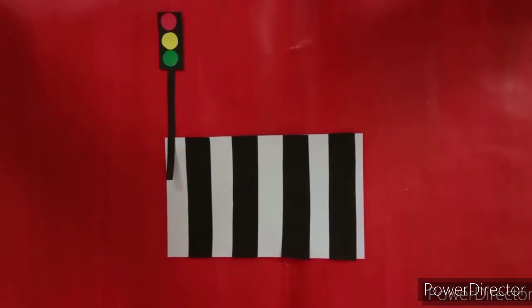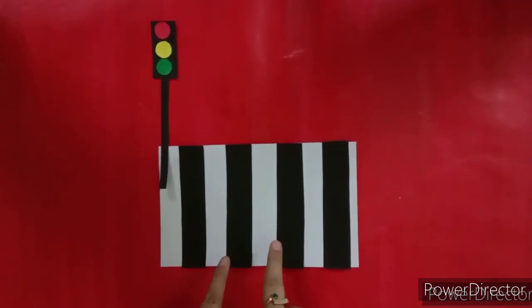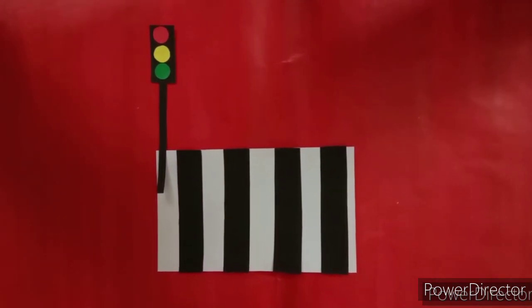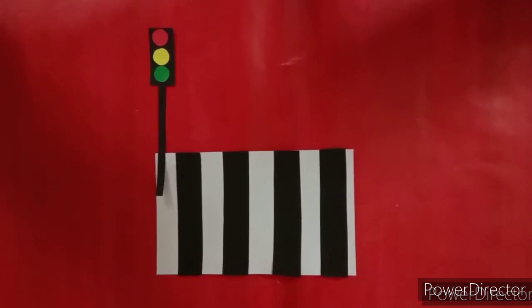Children, why this is called zebra crossing? Because it has black and white stripes. Same as zebra. I hope you enjoyed this activity.